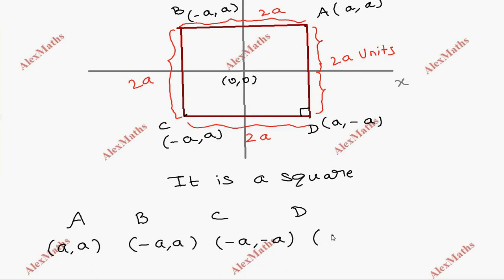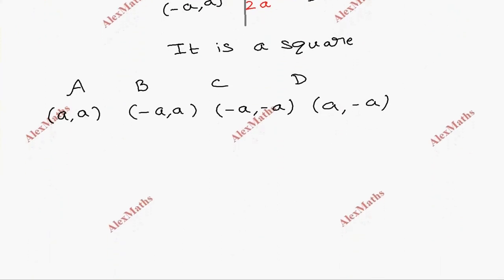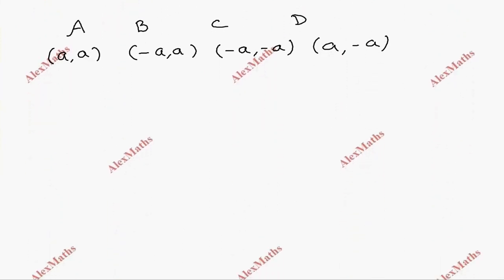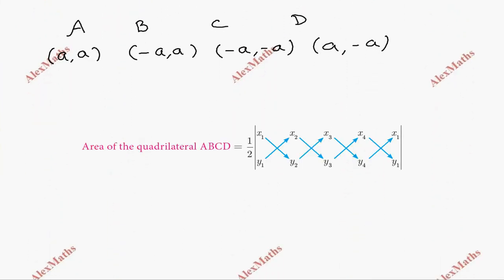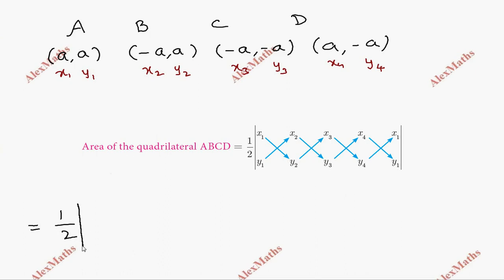When all coordinates are known, we use the area formula for a quadrilateral. The formula uses points: (x1, y1), (x2, y2), (x3, y3), and (x4, y4). We apply the shoelace formula to find the area from these four coordinate points.